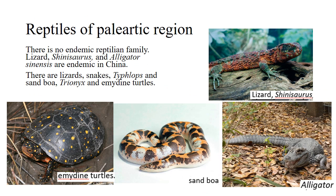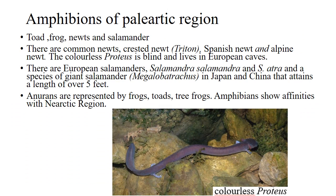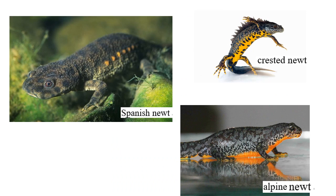There are no endemic reptilian families in the Palearctic region. Only the Chinese alligator (Alligator sinensis) is endemic to China. Reptiles present include lizards, snakes, diplodactylids, sand boas, drynix, and emydine turtles. Amphibians include toads, frogs, newts, and salamanders — common newts, crested newts, Spanish newts, and alpine newts. A colorless, blind proteus lives in European caves. Giant salamanders in Japan and China can reach over 5 feet in length. Anurans are represented by frogs, toads, and tree frogs. Amphibians show affinity with the Nearctic region.